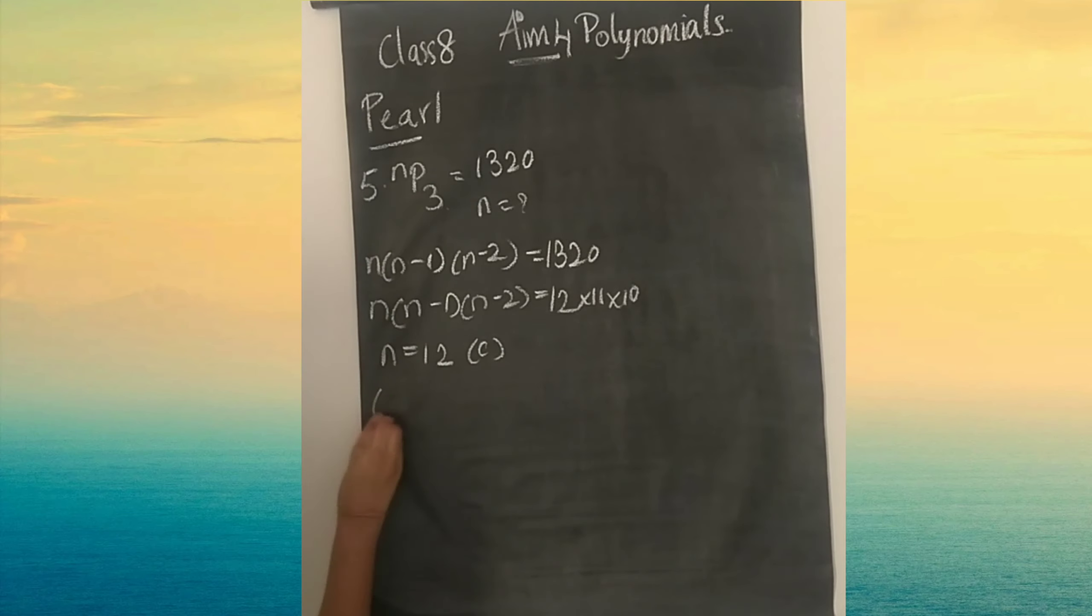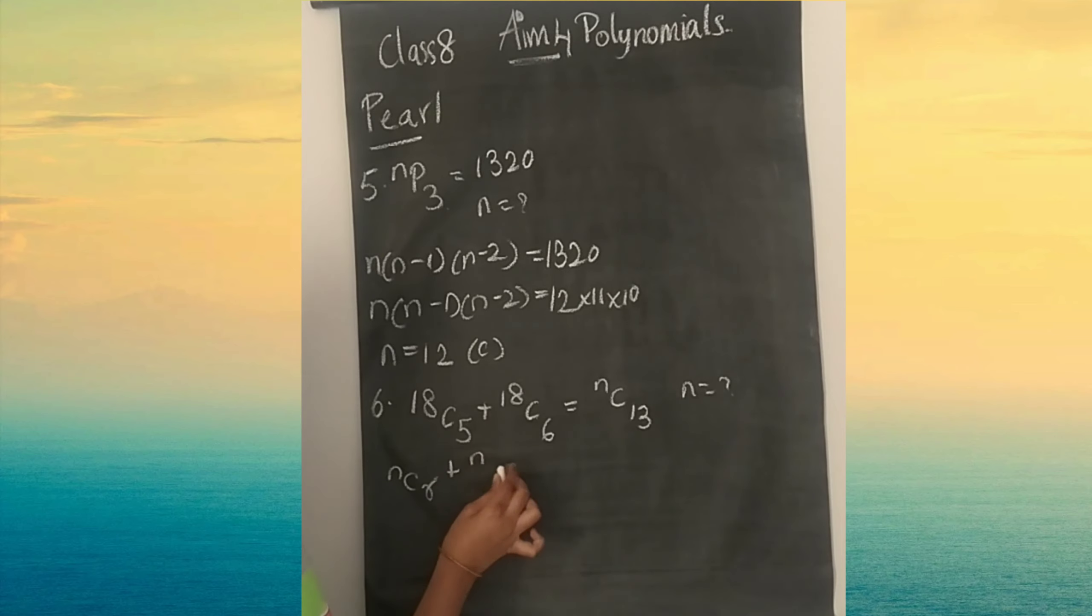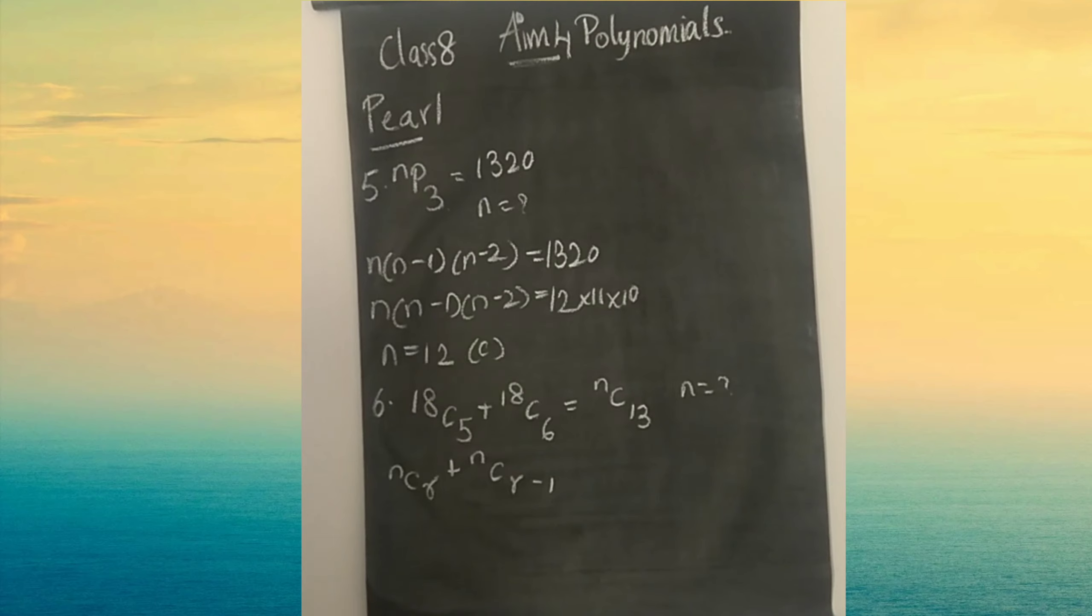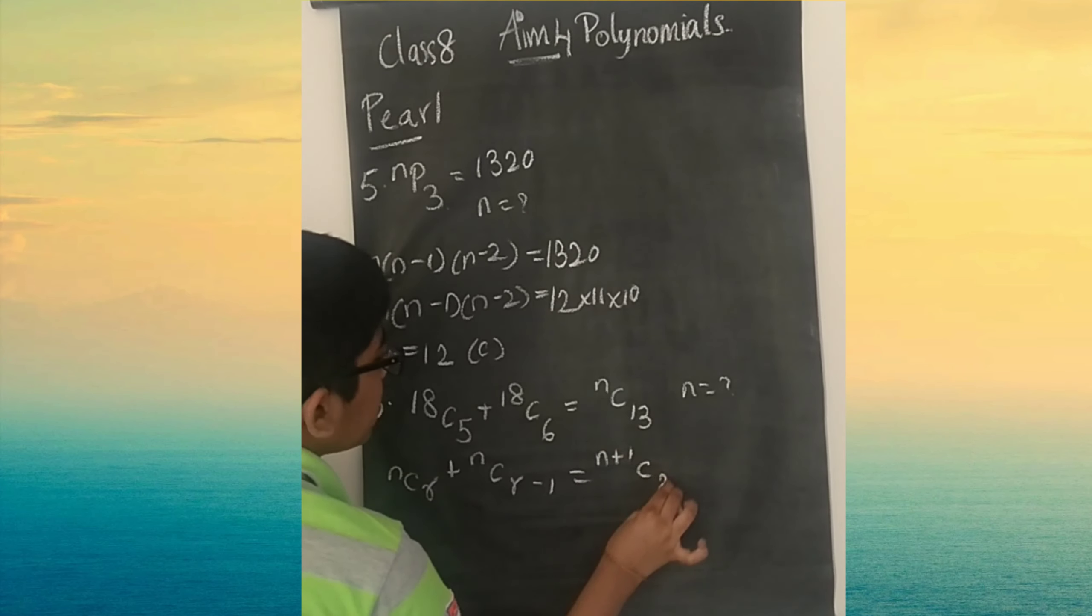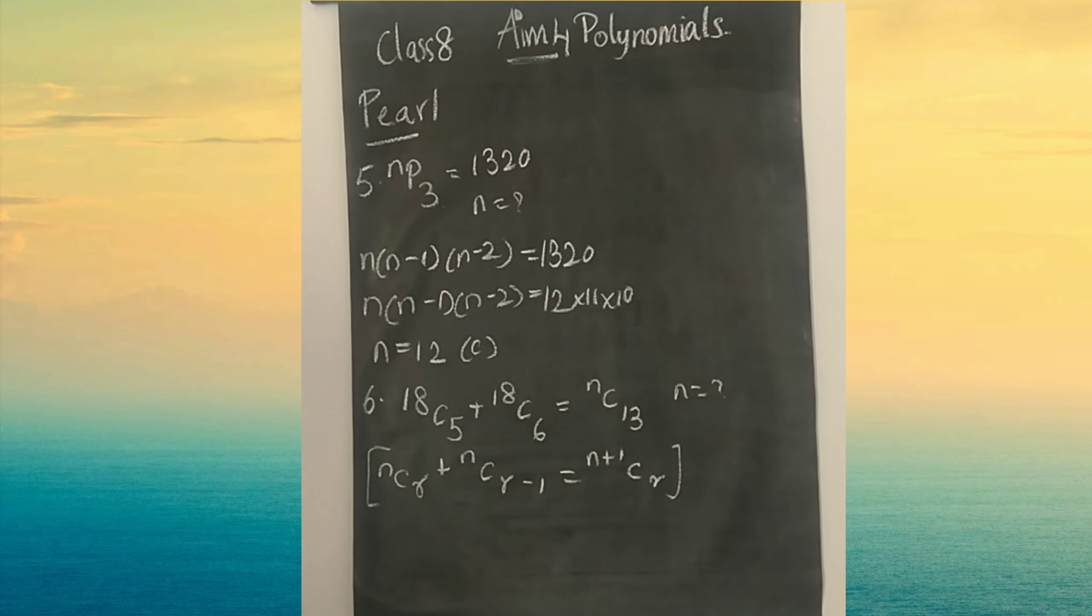Now sixth one. The given data is 18C5 plus 18C6 equals nC13. You have to find the value of n. We will use the formula nCR plus nCR minus 1 equals n plus 1 CR. We used this formula in the challenges second main.